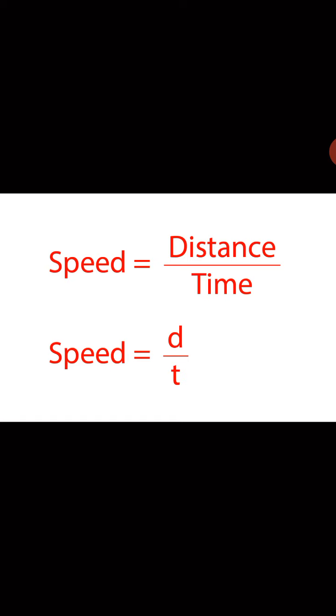The formula for speed is distance divided by time. So speed equals distance upon time.